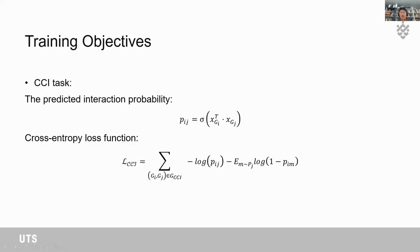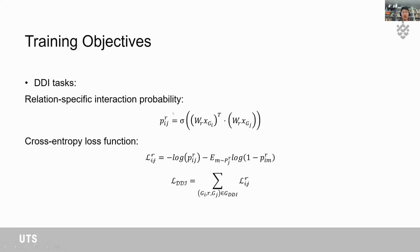For the training objective of the CCI task, we use the dot product of representations GI and GJ with a sigmoid activation function to ensure probabilities are in the range zero to one, and we use cross-entropy loss. For the DDI task, because there are multiple relations between GI and GJ, we first apply a relation-specific weight matrix W_R to linearly transform the learned representations, then use dot product with an activation function to obtain the interaction probability for relation R. We also use cross-entropy loss as the training objective.